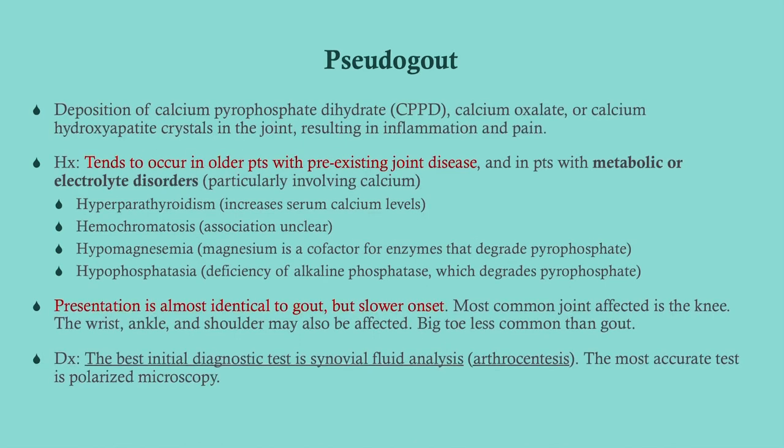Pseudo gout involves deposition of calcium pyrophosphate crystals — can also be calcium oxalate or calcium hydroxyapatite, but they're all calcium-based. This tends to occur in older patients with pre-existing joint disease. On a vignette, look for a patient with osteoarthritis that suddenly got worse over the last couple of days with no injury. Some metabolic or electrolyte disorders can precipitate this — look for hyperparathyroidism, which naturally increases calcium levels.